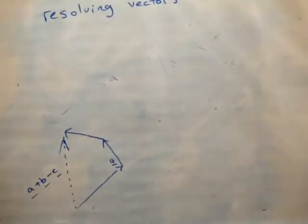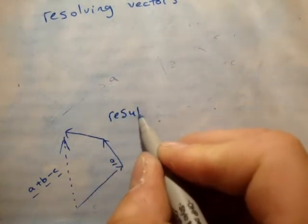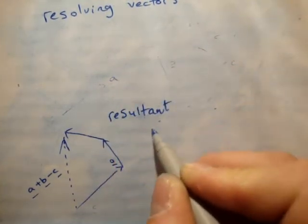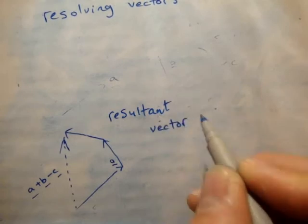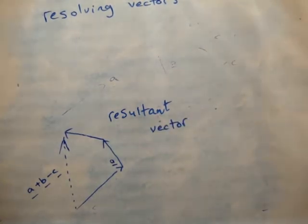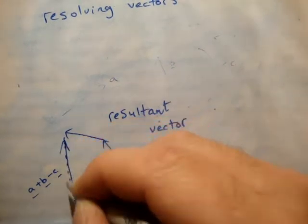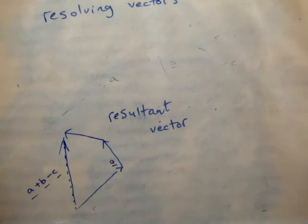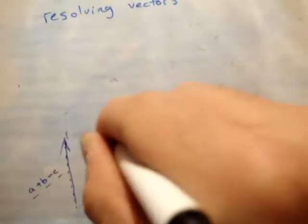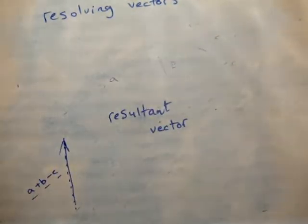So this vector we drew — A plus B minus C — that is your resultant vector. After drawing your resultant vector, you'd get rid of the rest of them because they don't matter. You usually don't care what other vectors came together to make this one; you just say, well, that's my vector, and that's it.